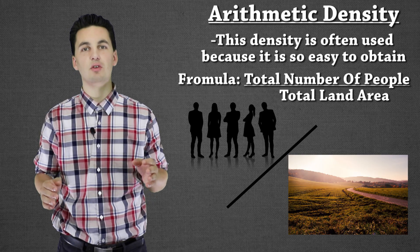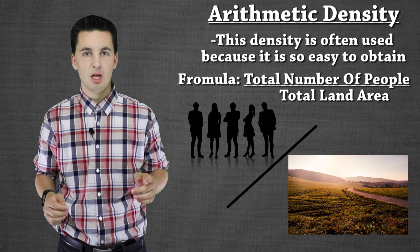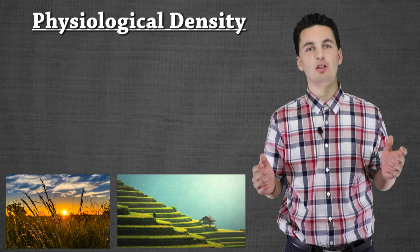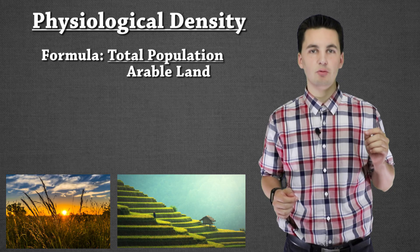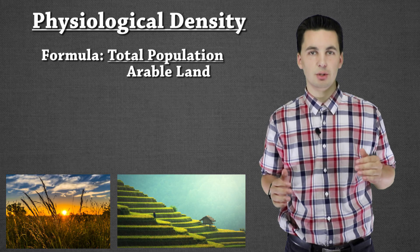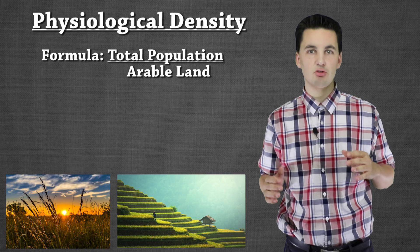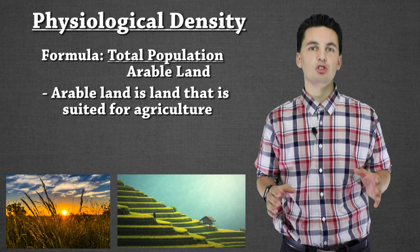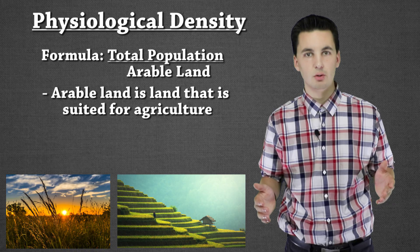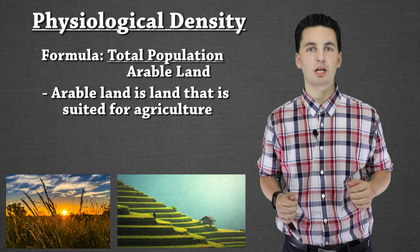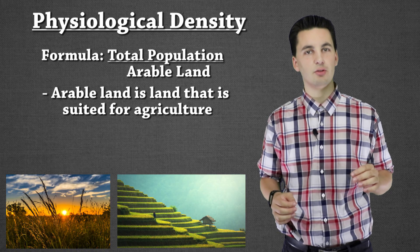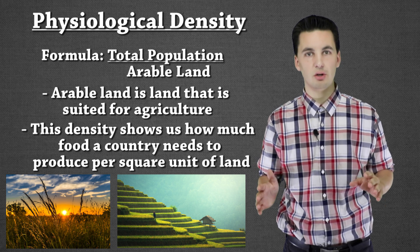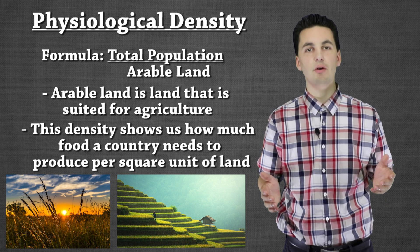Our next density is the physiological density, and this one is really important — this is where we can start to see how comparing densities makes them even more valuable. To figure out physiological density, we take the total number of people and divide it by our arable land. Arable land is land that we can actually grow and produce food on. What this number shows us is how much food we need to produce per kilometer of land, and it reveals how much stress we'll put on our farmland.